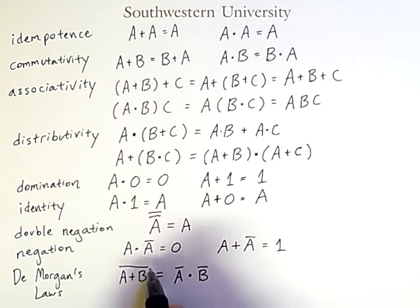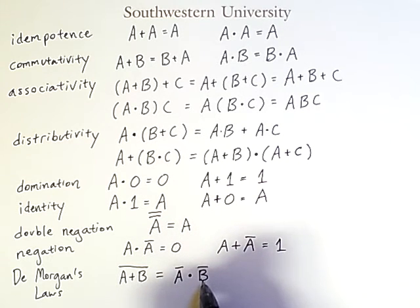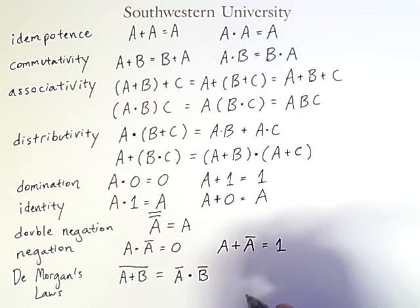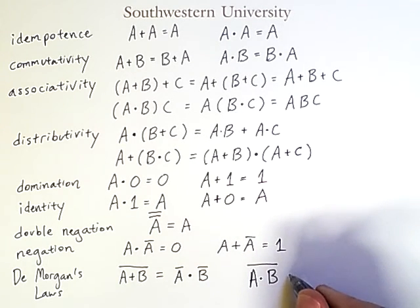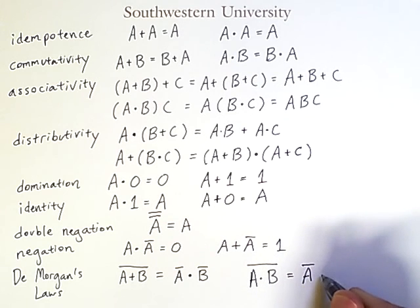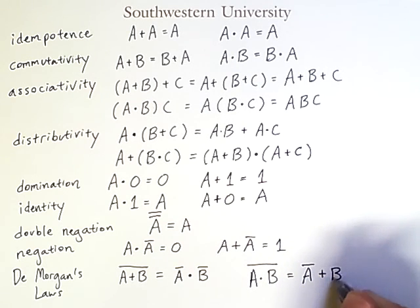So the whole expression was negated and now the individual components of it are negated. But on top of that, the OR became an AND. So it is like distribution in that the negation is split up across sub-expressions, but it is different from distribution in that the actual operator here changed from OR to AND. Similarly, the negation of A AND B is equal to the negation of A OR the negation of B.